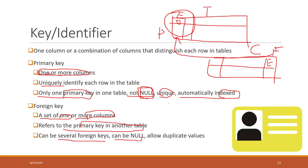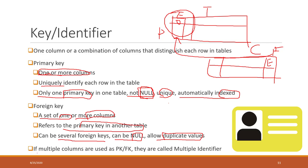Foreign keys can be null, so you can have empty values, and you can also have duplicate values for the foreign key columns. If you use multiple columns as the primary key or the foreign keys, they are sometimes also called multiple identifiers.